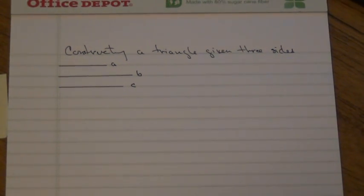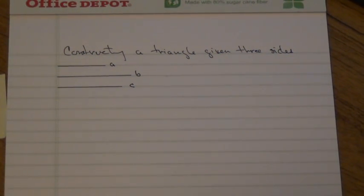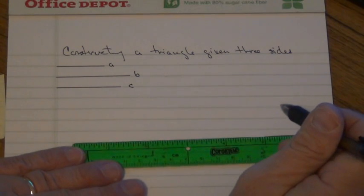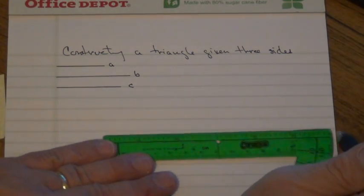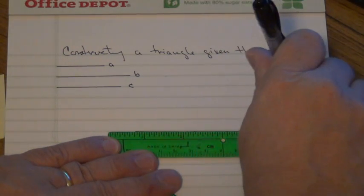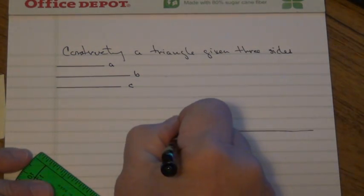Okay, now what I'm going to do is I'm going to construct a triangle given three sides, given three lengths. So I'm just going to start out with a line and a point on that line.